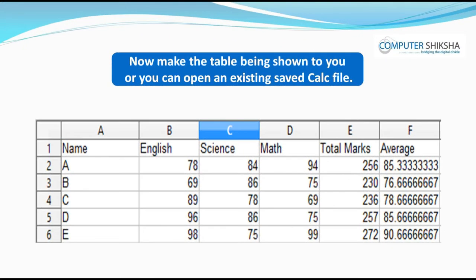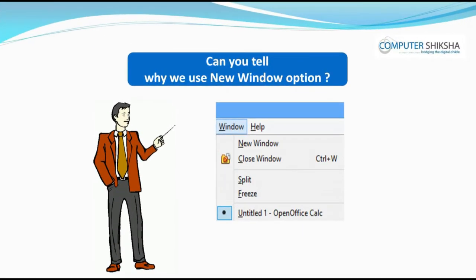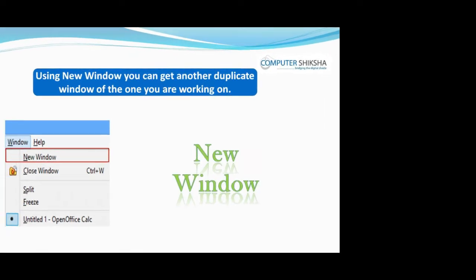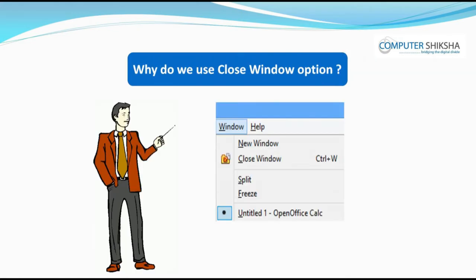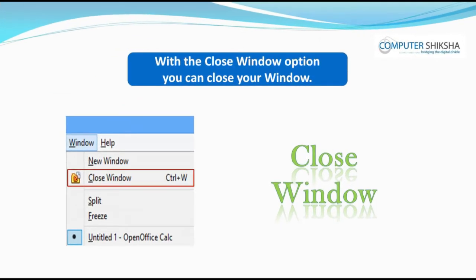Now make the table being shown to you, or you can open an existing saved calc file. Can you tell why we use the new window option? Using the new window, you can get another duplicate window of the one you are working on. Why do we use the close window option?